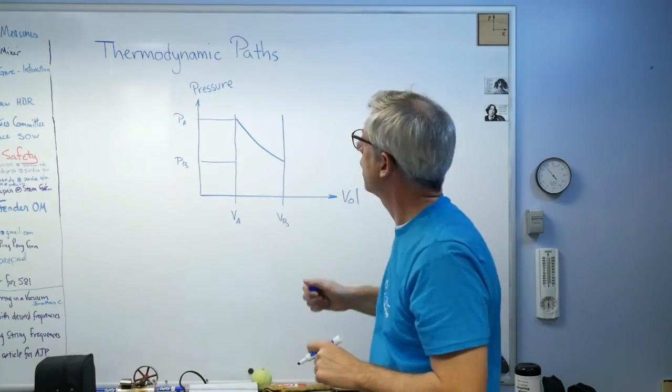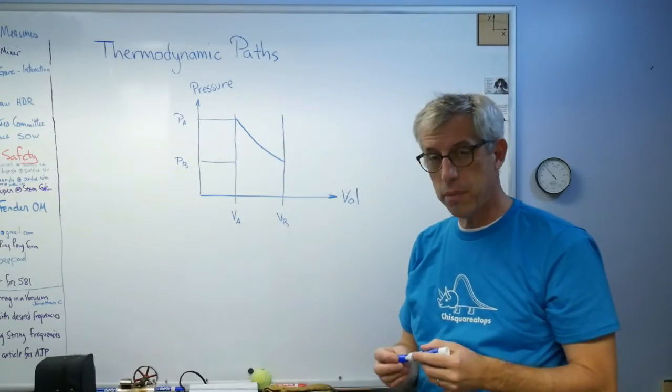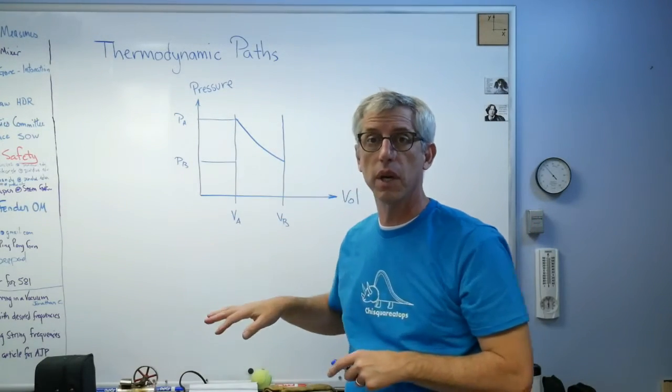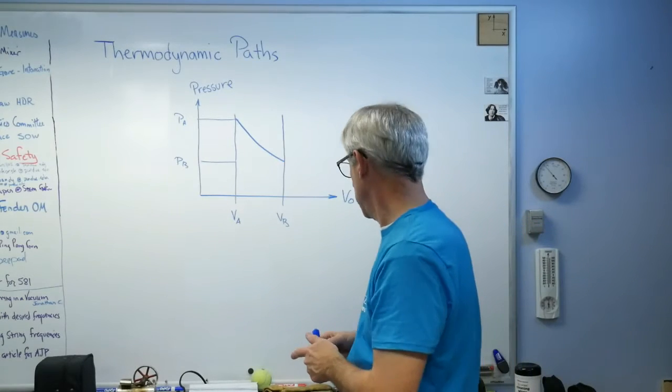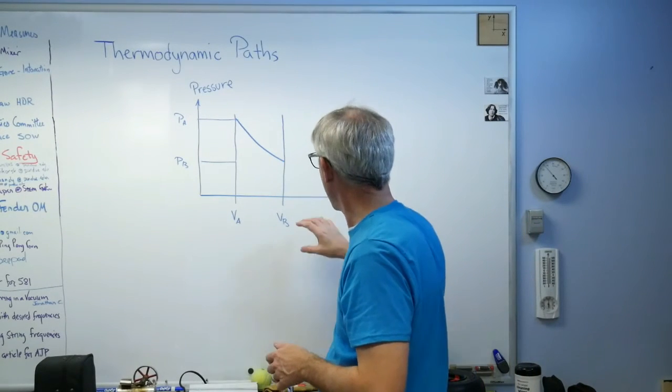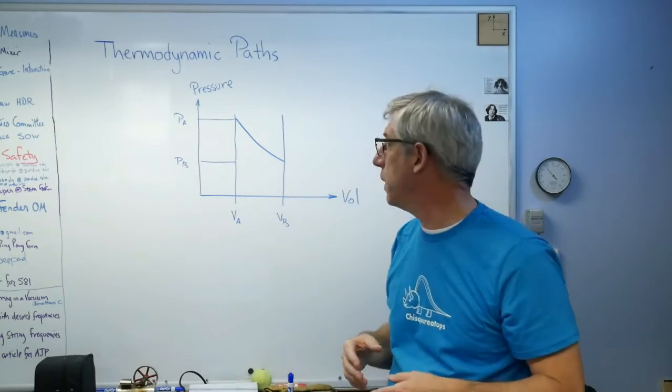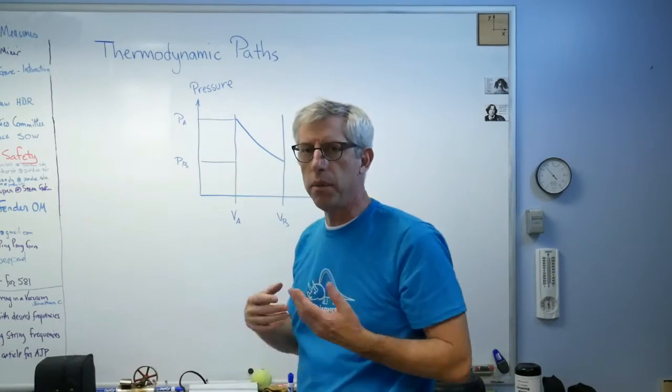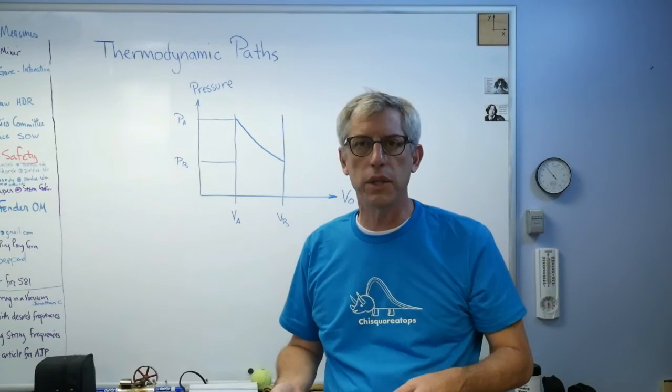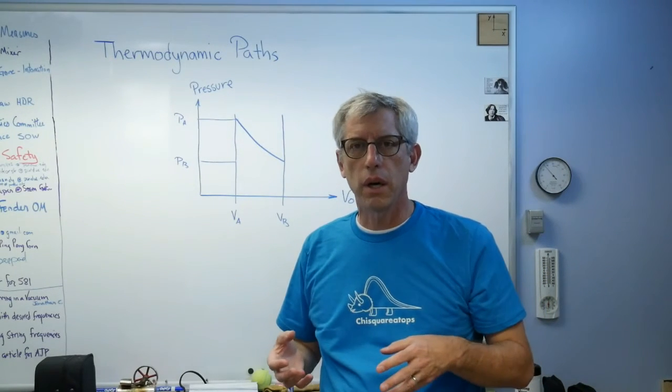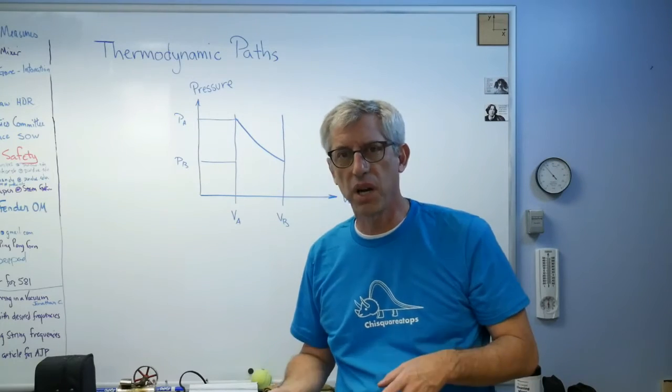That's a thermodynamic path. This is what they look like when you look in the books. This is what they look like. So this is another example of this sort of abstract way of thinking: pressure, volume.